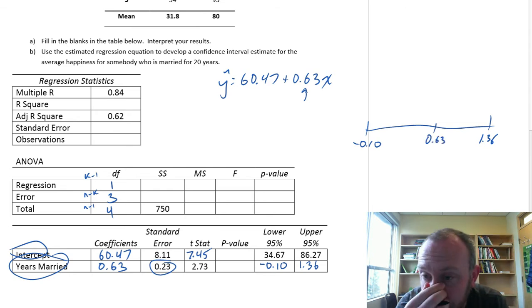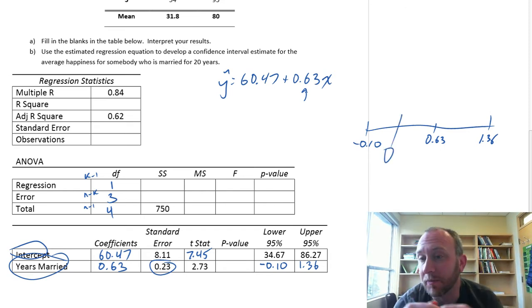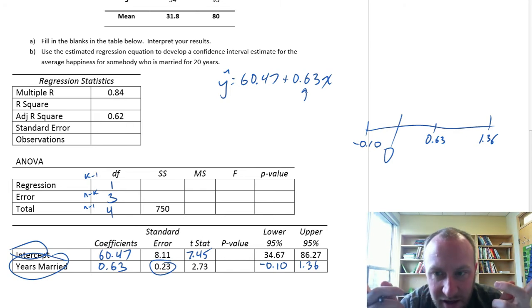We've developed a confidence interval estimate around this slope coefficient that ranges from negative 0.1 to 1.36, with our point estimates in the middle. So what can we say about this? Well, at the 95% level of confidence, we're unable to say that it's not 0. Zero is certainly a possibility.